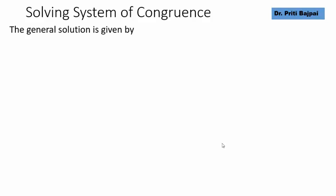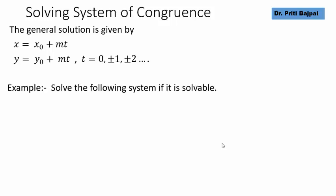We write the general solution as x is equal to x0 plus mt, y is equal to y0 plus mt, where t value takes all the values 0 plus minus 1 plus minus 2. This gives us infinite solutions.